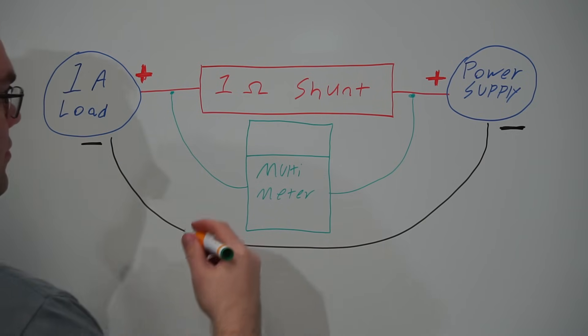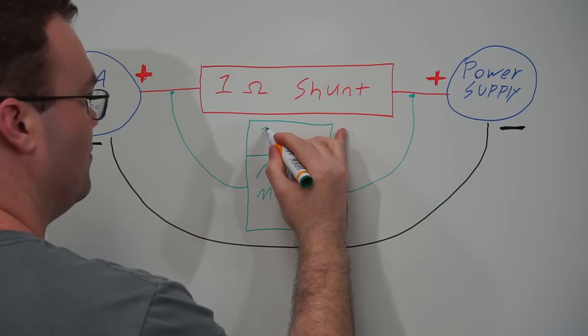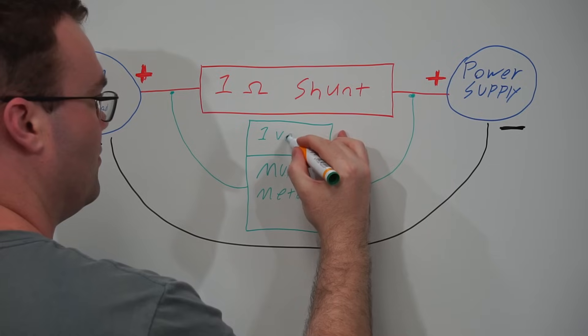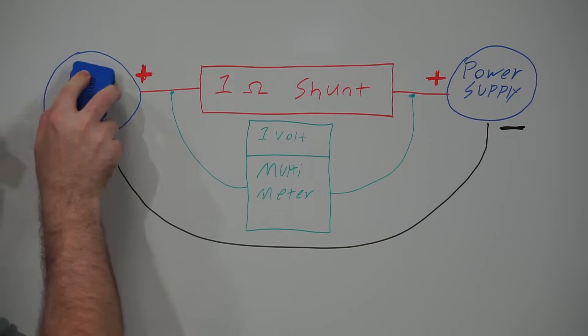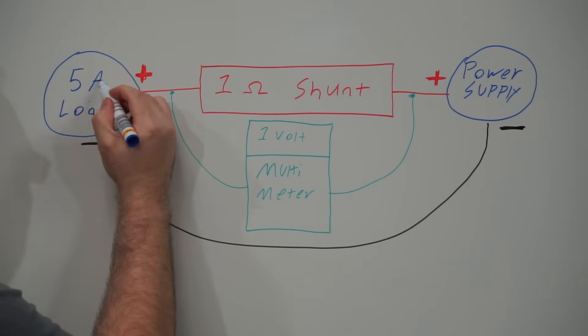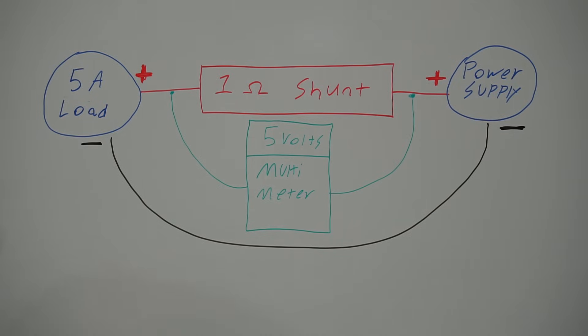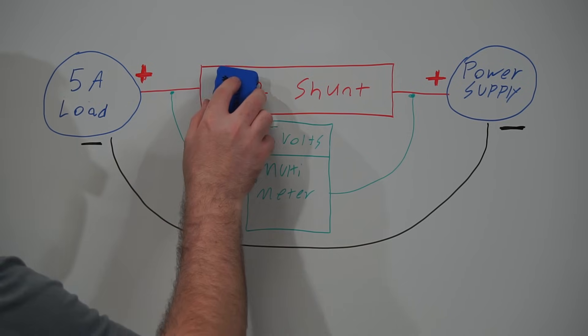So if we attach our multimeter leads on each side of the shunt, we will be able to measure the voltage drop across the shunt when current is flowing. With a 1 amp load, the multimeter will read a voltage drop across the shunt of 1 volt. This voltage drop is directly proportional to the amount of current passing through the shunt. So at 1 amp of current, we have a 1 volt drop. Now if we increase the load to 5 amps, the voltage drop will also increase to 5 volts.